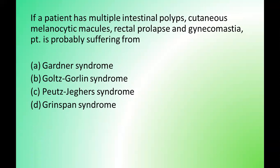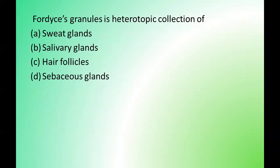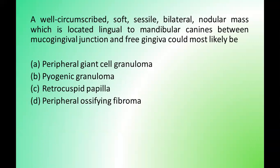Next question: if a patient has multiple intestinal polyps, cutaneous melanocytic macules, rectal prolapse, and gynecomastia, the patient is probably suffering from which syndrome? Options are: Gardner syndrome, Cowden syndrome, Peutz-Jeghers syndrome, Greenspan syndrome. The correct answer is option C — Peutz-Jeghers syndrome. Next question: Fordyce granules are a heterotopic collection of which structure? Options are: sweat glands, salivary glands, hair follicles, sebaceous glands. The correct answer is option D — sebaceous glands.